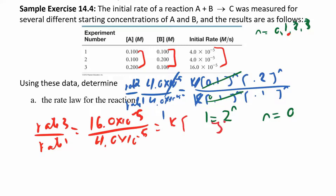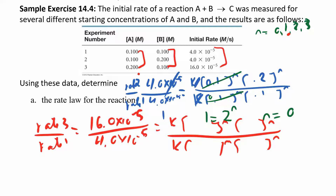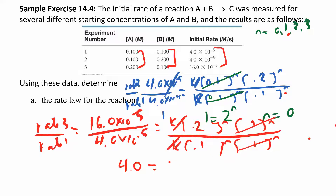Setting up the ratio: concentration of A to the m times concentration of B to the n, over concentration of A to the m times concentration of B to the n. Reading off line 3: A is 0.2, B is 0.1 for experiment 3, and 0.1 and 0.1 for experiment 1. This simplifies to 4 equals 2 to the m after k's and the B terms cancel. Checking: 2 to the 0 is 1, 2 to the 1 is 2, 2 to the 2 is 4 — so m equals 2.